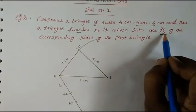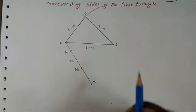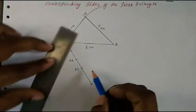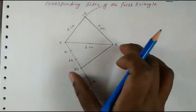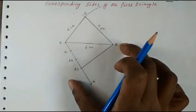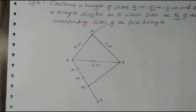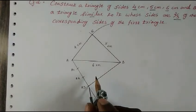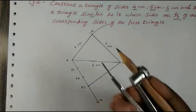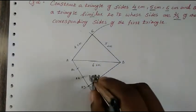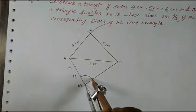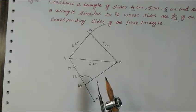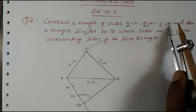Now we look at the denominator, which is 3. So we join A3 with B. To this line A3B, we have to draw a parallel line. Please go through the introduction where I have explained this in detail. To draw a parallel line, first we draw the angle for this line — take any measure and draw the angle.